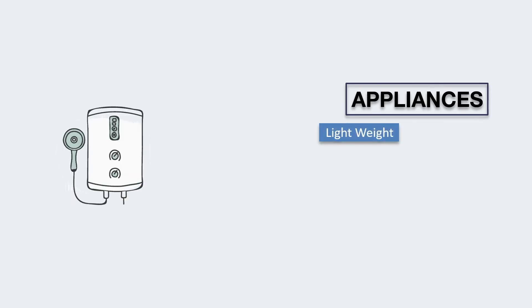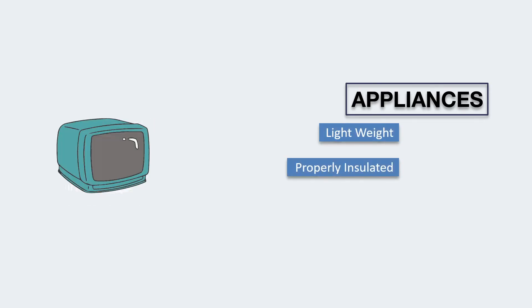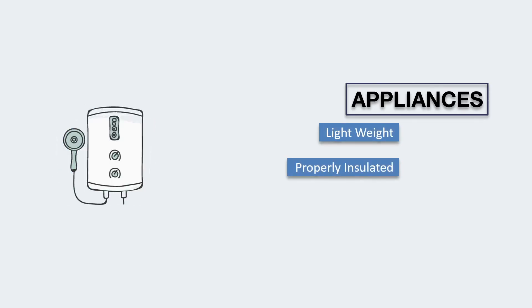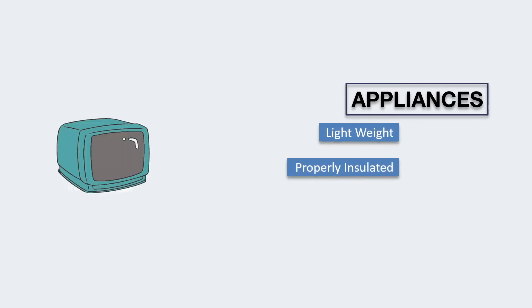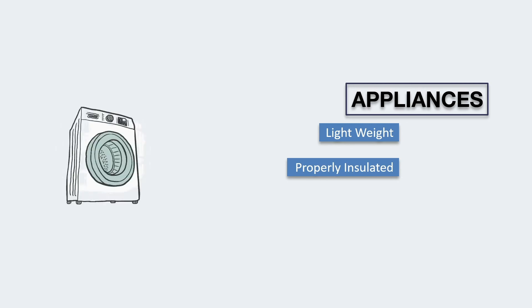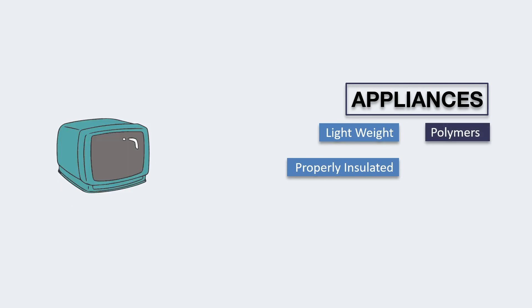Next, appliances. They should be lightweight and properly insulated, so the material should be heat or electrically resistant. Generally, they are made using polymers and plastics.